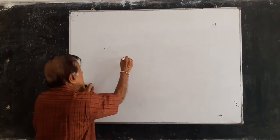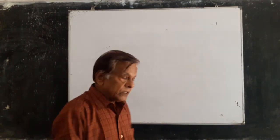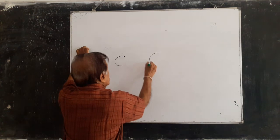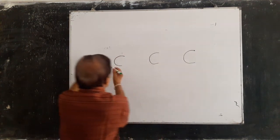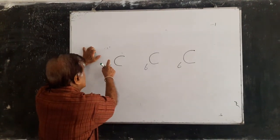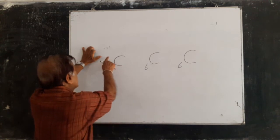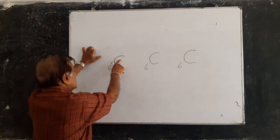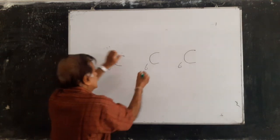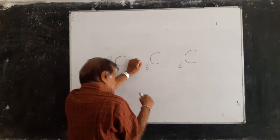In carbon there are three isotopes. The atomic number of carbon is six, so all carbon atoms have six protons. In the most common carbon isotope there are six neutrons, giving a mass number of twelve — this is C-12. In another isotope there are six protons and seven neutrons, giving a mass number of thirteen — C-13.